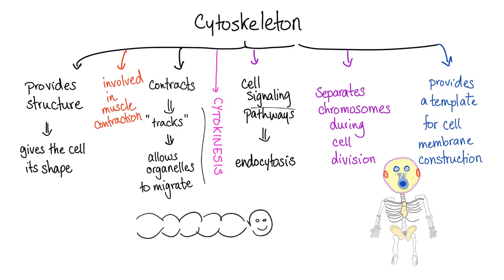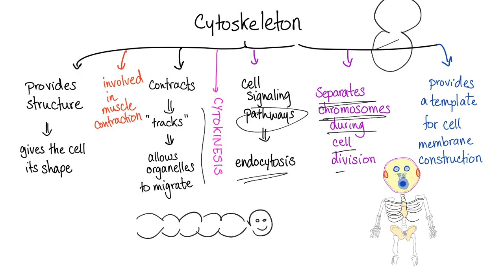Cytokinesis. Cell signaling pathways for endocytosis. It separates chromosomes — called segregation — during cell division. So there will be a cell here and another cell here, and it will segregate the chromosomes. They are held by something called the mitotic spindle. The cytoskeleton separates chromosomes and provides a template for cell membrane construction.